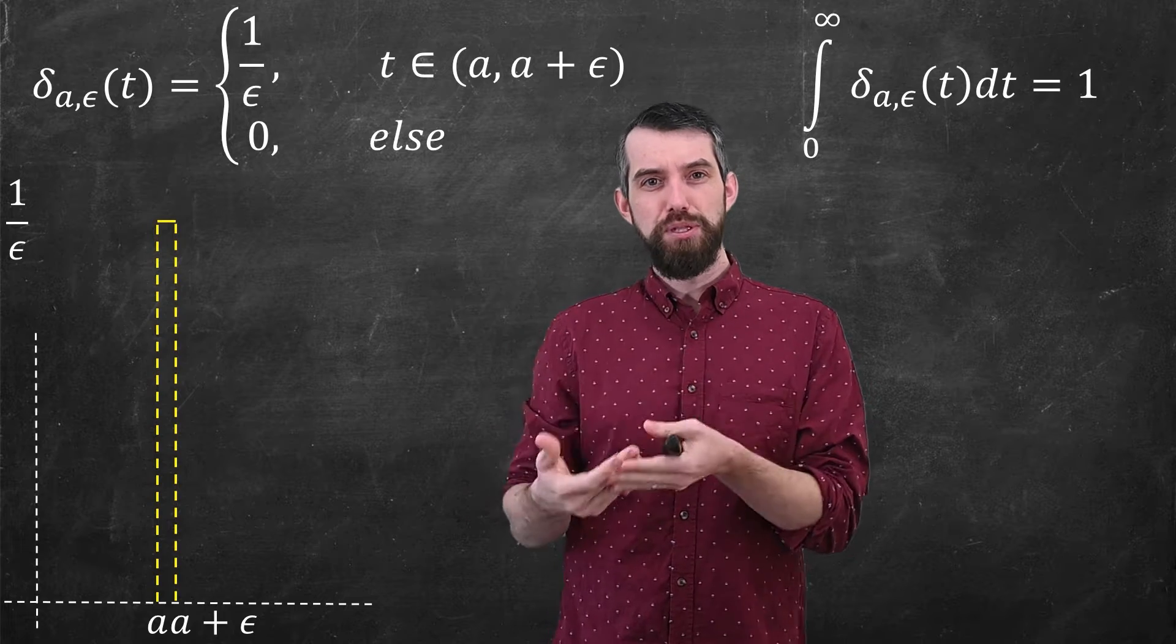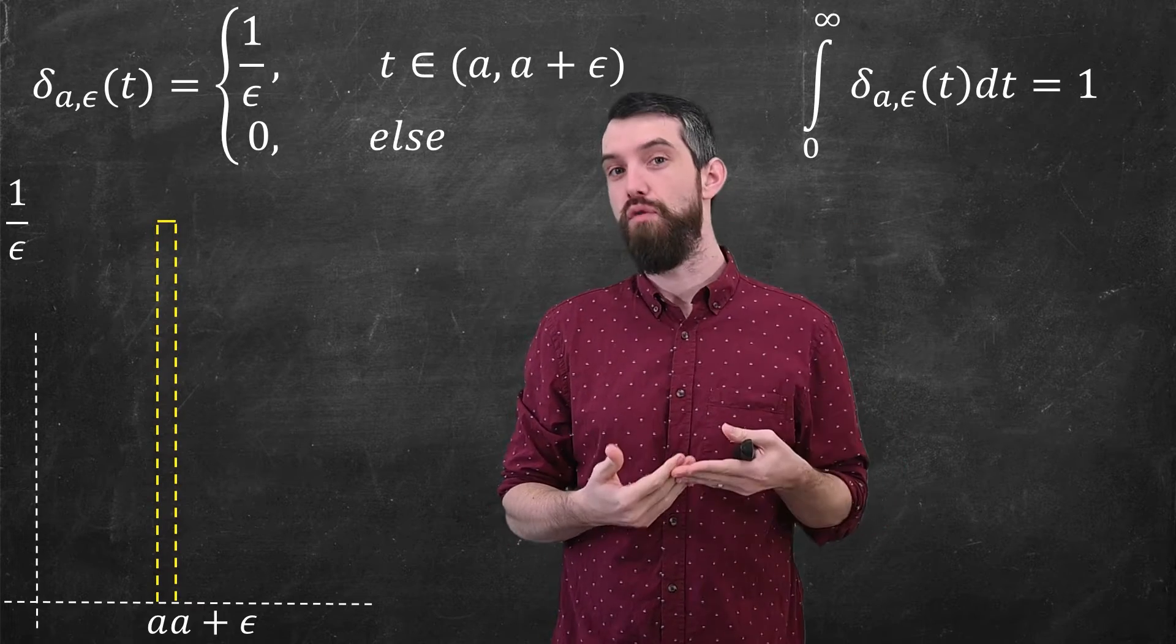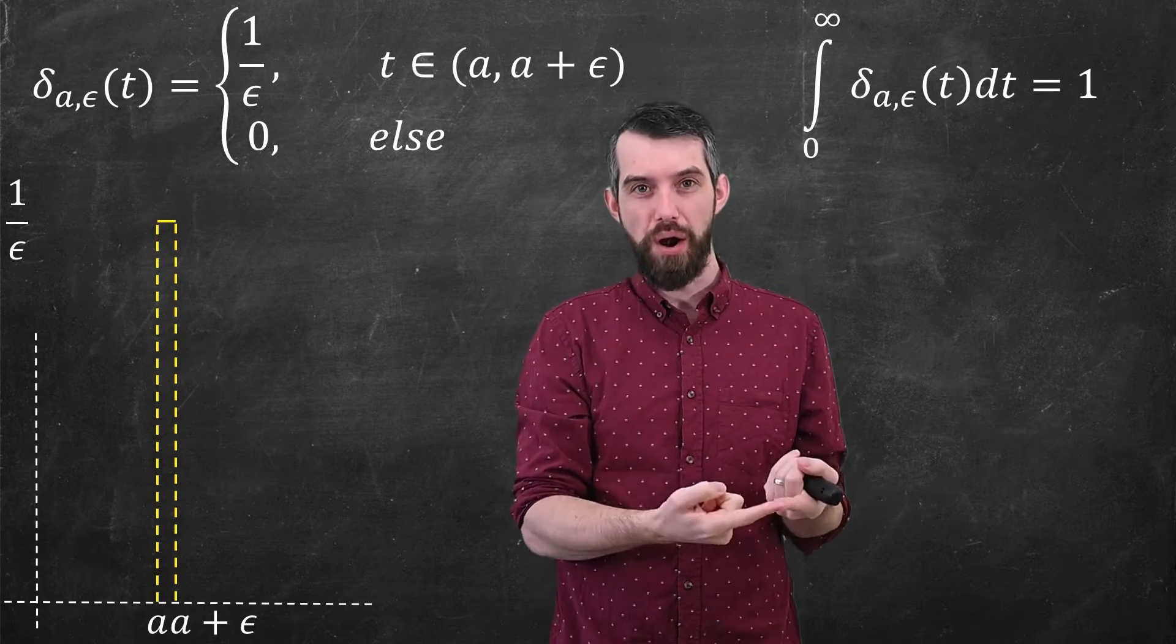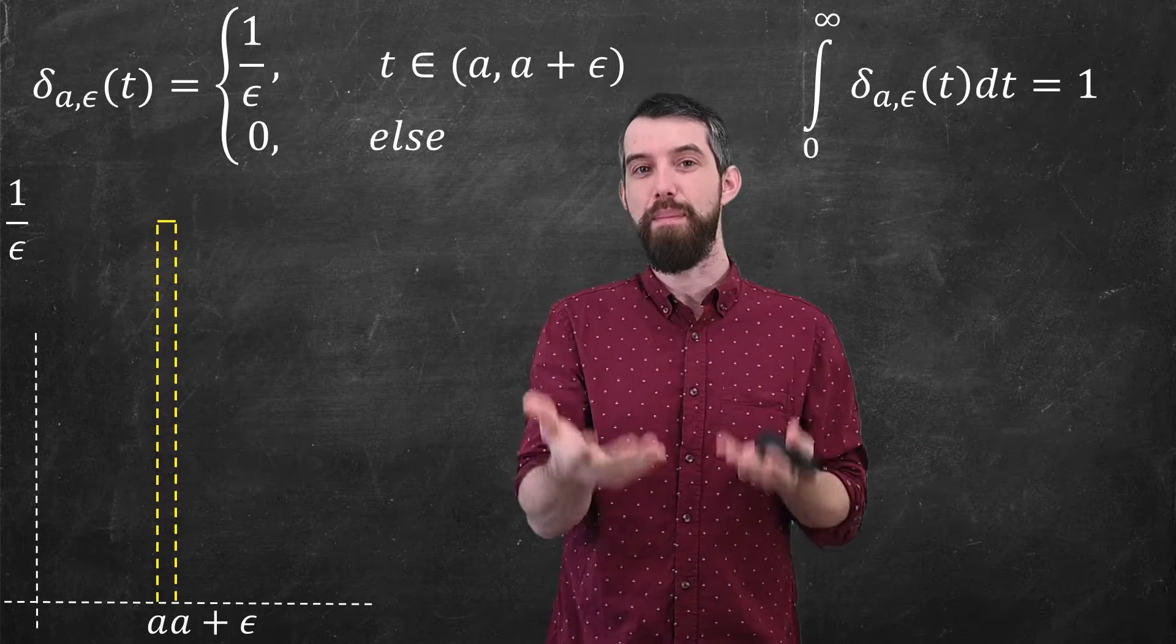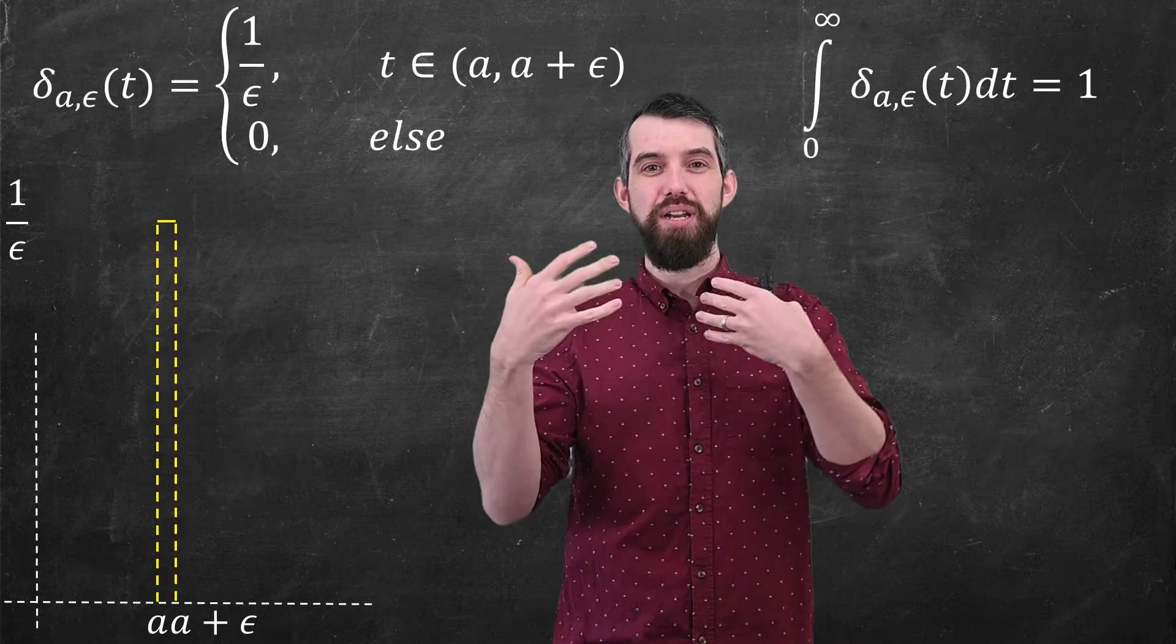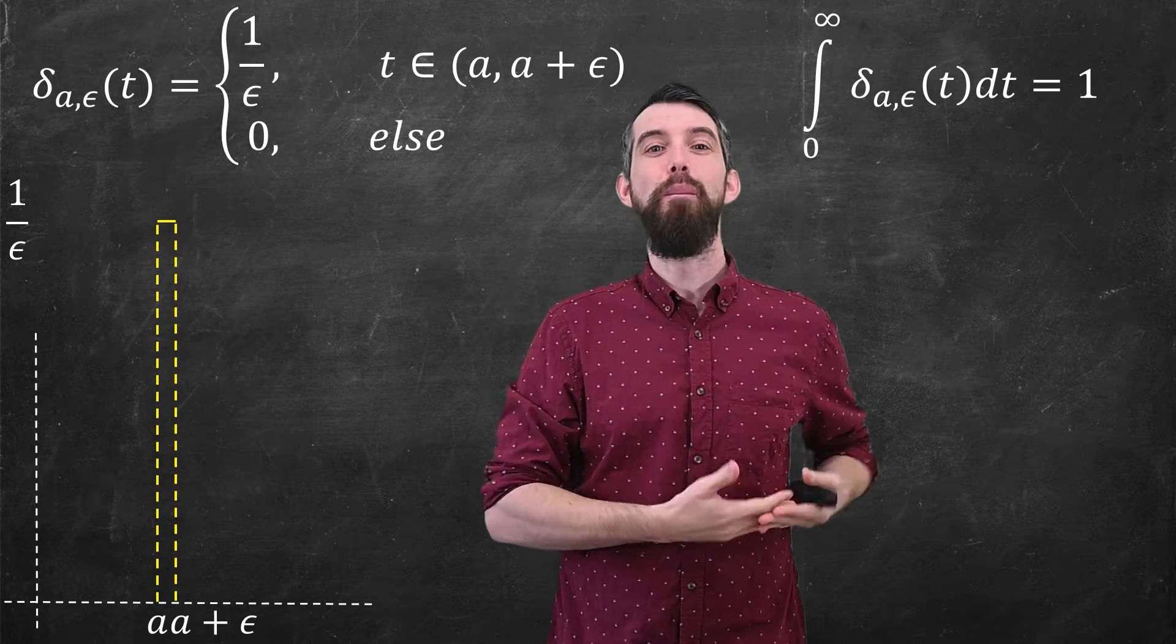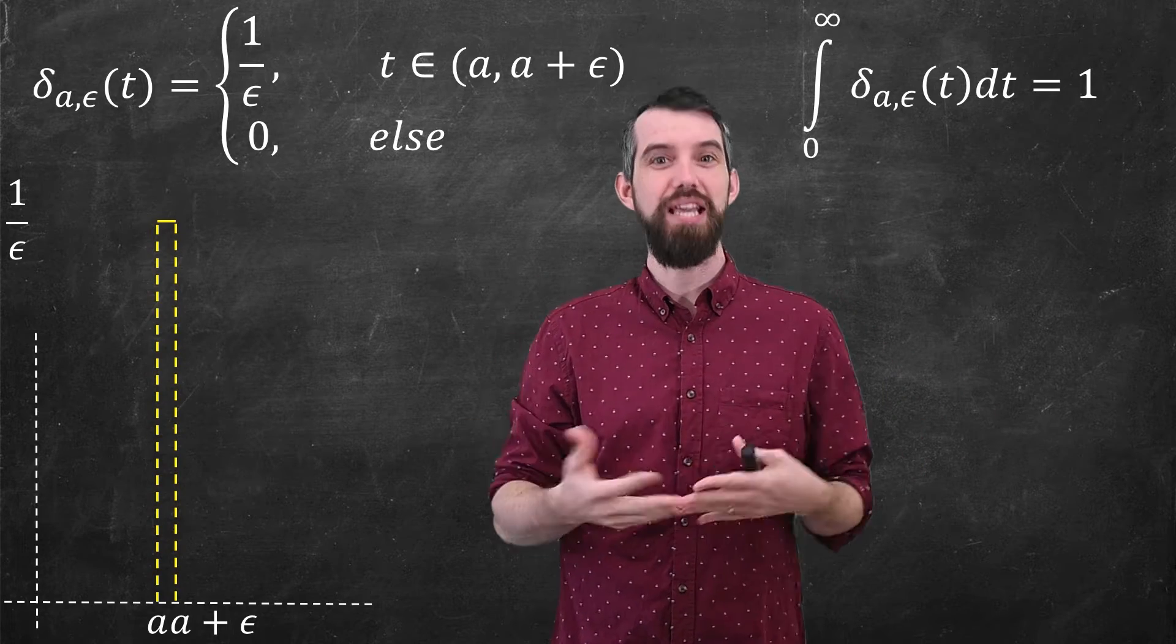Note that when epsilon is very small, one over epsilon becomes very, very large. So this is indeed modeling the kind of hammer strikes that I'm imagining. So now I want to take this to an idealized place. I want to imagine epsilon going to zero and taking some sort of limit.